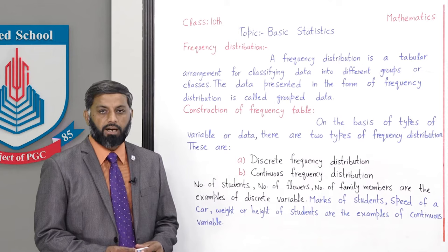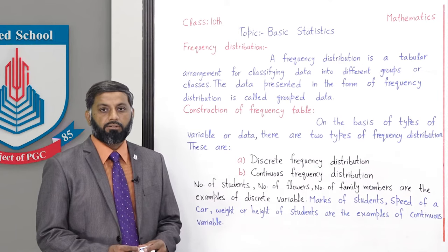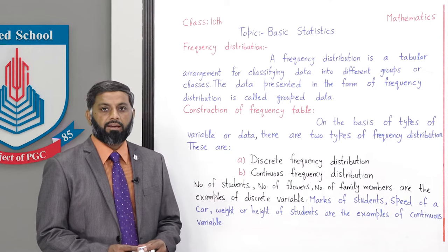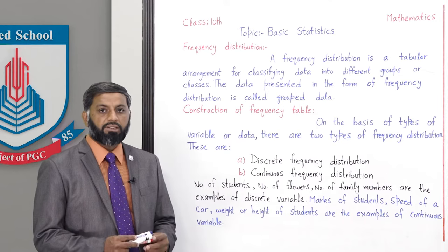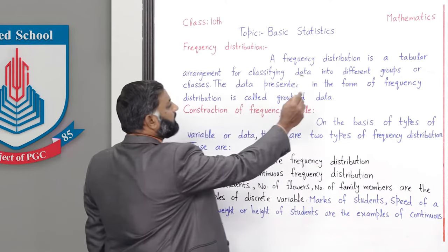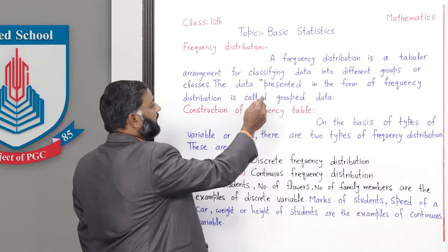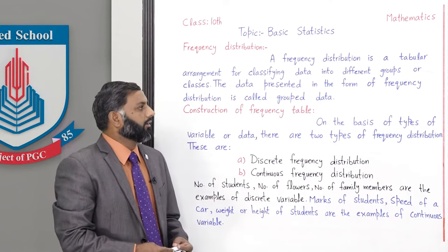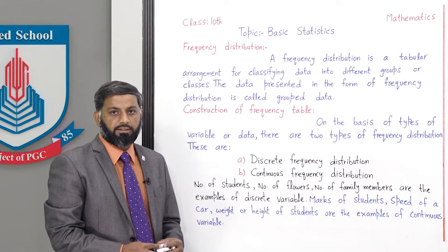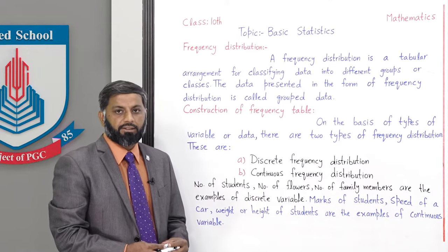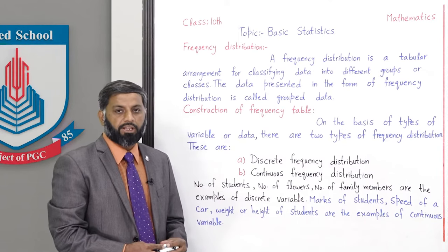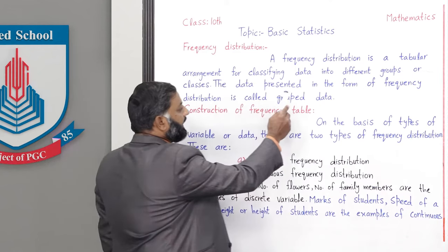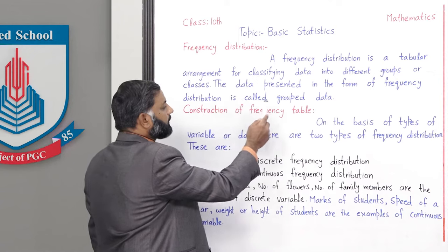اس raw data کو ہم ungroup data بھی کہتے ہیں۔ پھر دو methods ہیں جن سے اس ungroup data کو group data میں convert کرتے ہیں — اسے frequency distribution بنانا کہتے ہیں۔ Frequency distribution is a tabular arrangement for classifying data into different groups or classes. The data presented in the form of frequency distribution is called grouped data.